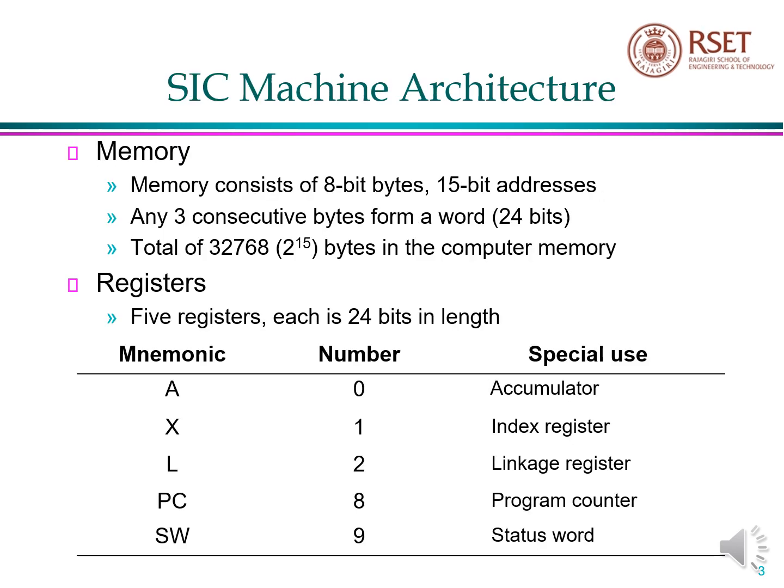Architecture of an SIC machine. First of all, let us see memory. We all know that memory consists of many locations, and each location is having a unique memory address. In the case of an SIC machine, one memory location can store a maximum of 8 bits, or otherwise 1 byte. The memory address of an SIC machine is of length 15 bits, so altogether 2^15 different memory locations can be addressed. Three consecutive bytes form a word, that is 8 into 3 equal to 24 bits.